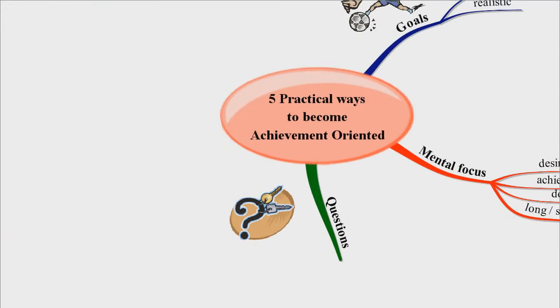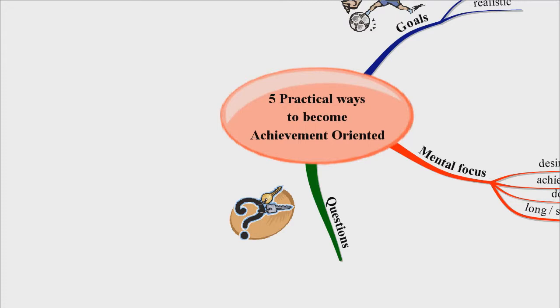Number three: questions. Anthony Robbins says the quality of your life depends on the quality of questions you ask on a daily basis. If you ask poor quality questions, you get poor quality answers, take poor quality action, and get poor quality results.